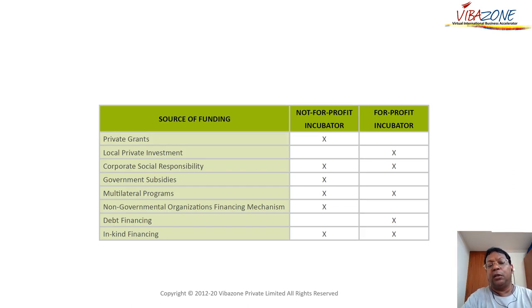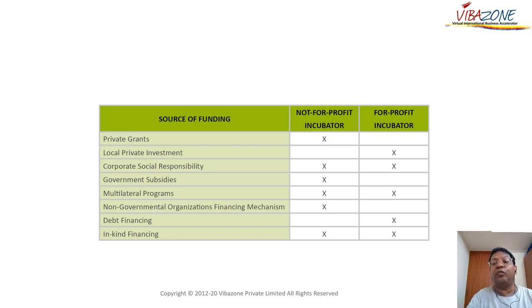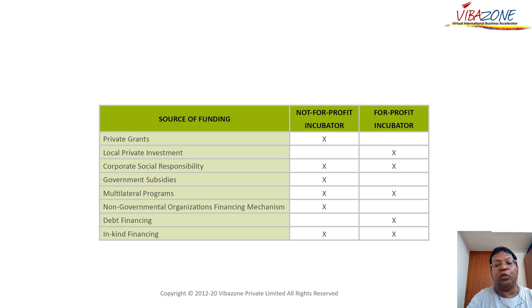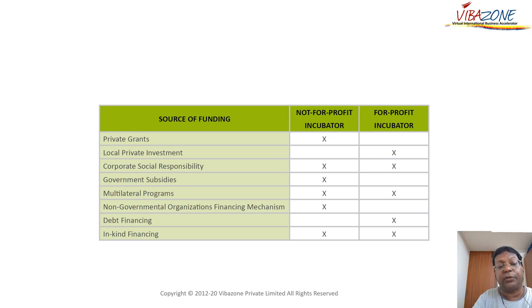There are two types of incubators: for-profit and non-profit. For non-profits it is easier to access private grants. For-profit incubators need to look for private investment. Corporate social responsibility funding works for both. Government subsidies are generally given to non-profits. You can run multilateral programs to generate income for both types. NGO funding mechanisms are available for non-profits. Debt funding is easier to manage for for-profit incubators. You could also have in-kind services — mentors and trainers might offer services in exchange for future equity in some startups. Think all this through carefully before moving to the next stage.